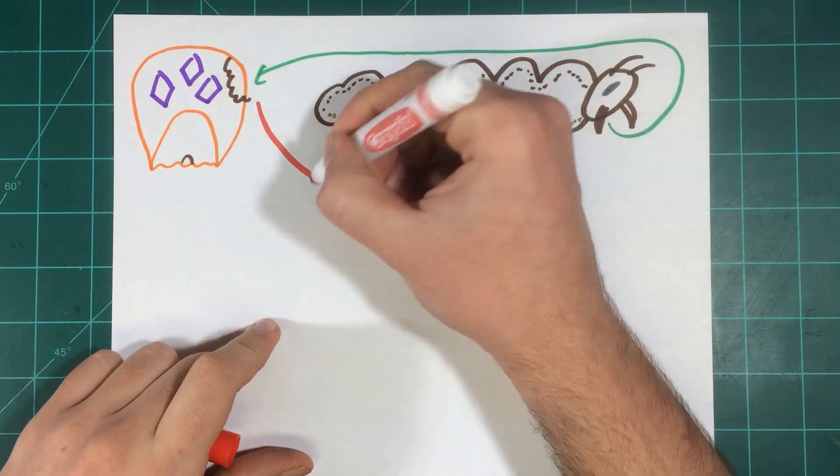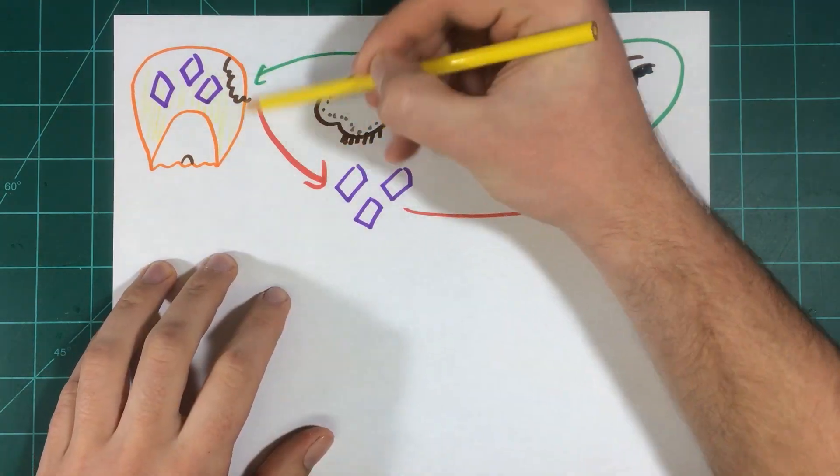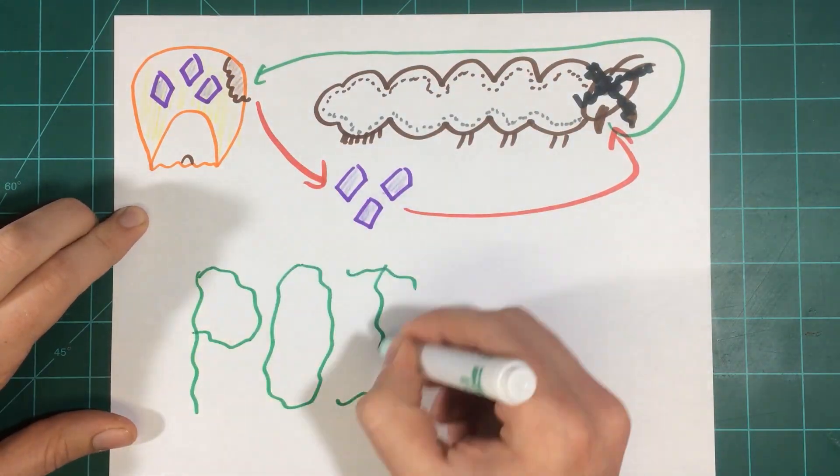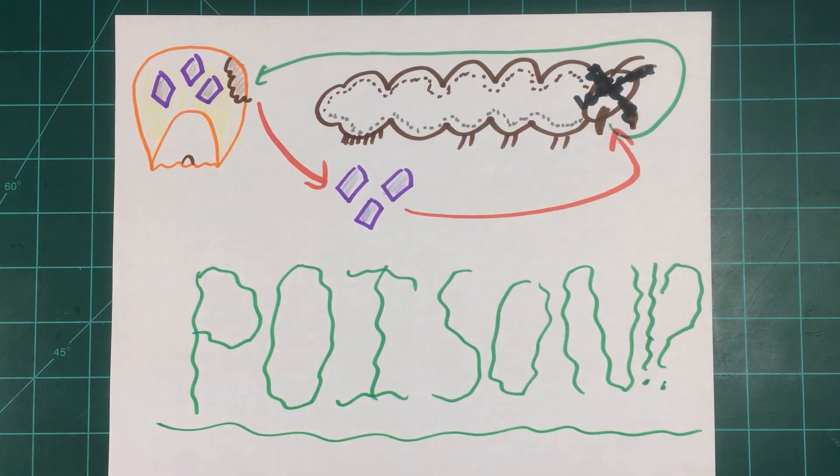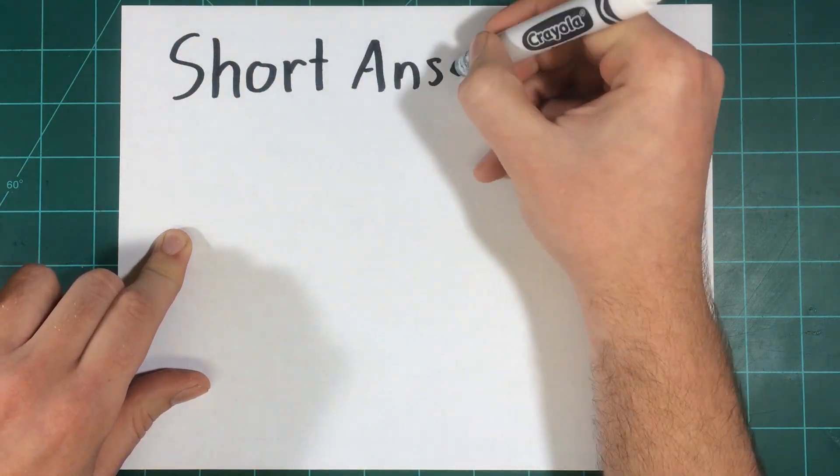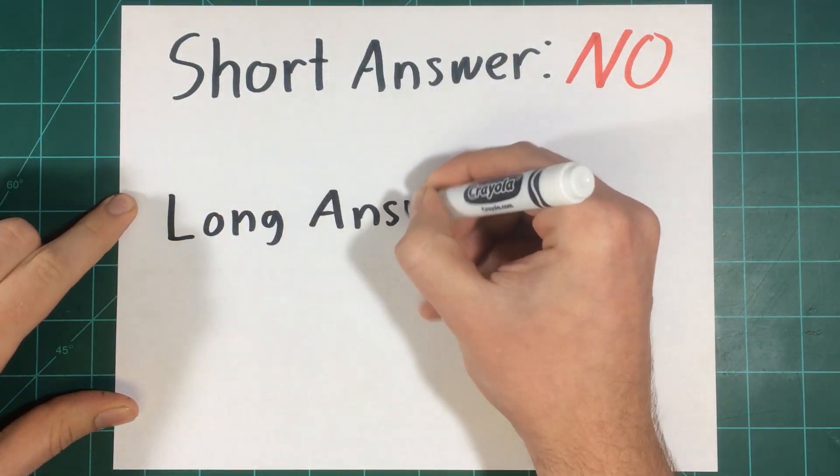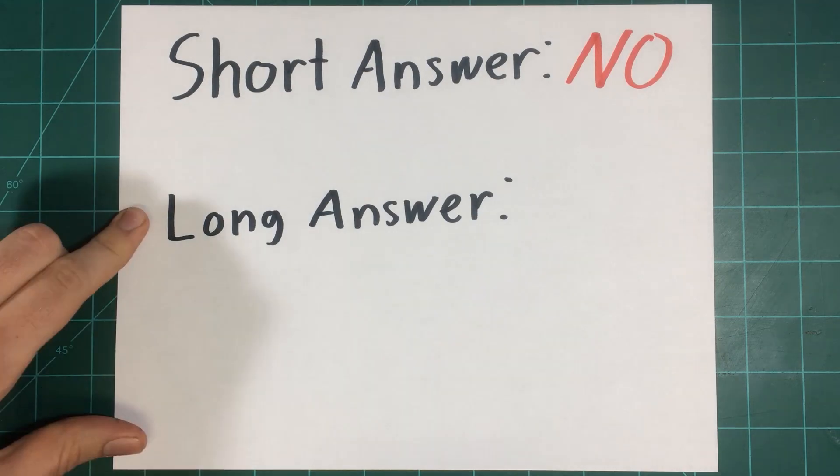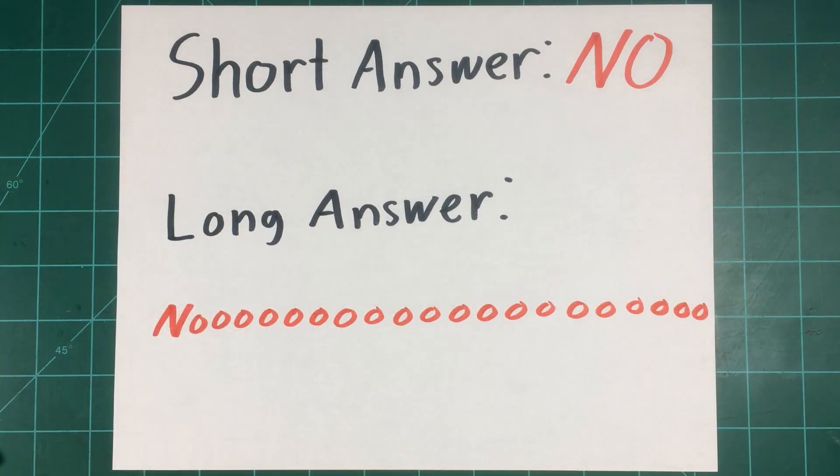This may sound alarming to consumers. After all, if the corn is poisonous to caterpillars, isn't it also poisonous to us? The short answer is no. To understand why, let's explore how BT proteins harm pests but not other organisms.